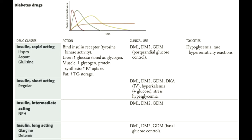Lastly, the two long-acting insulins, their effects shown in orange on the graph, are Glargine and Detemir.